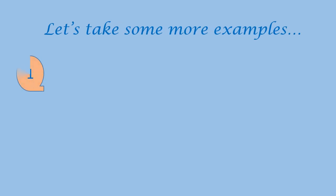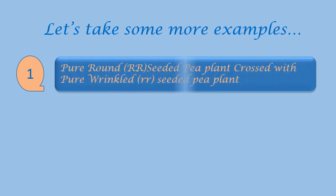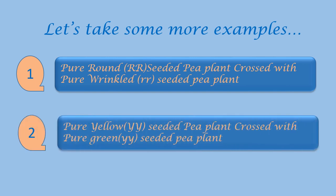Let us take some more examples. First is: a pure round seeded pea plant is crossed with pure wrinkled seeded pea plant. Second: a pure yellow seeded pea plant is crossed with pure green seeded pea plant.